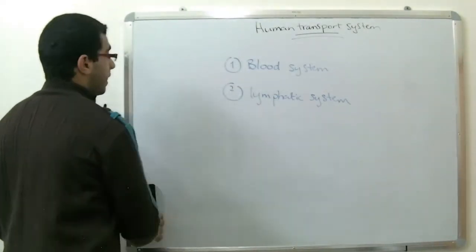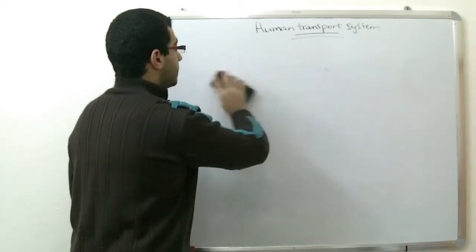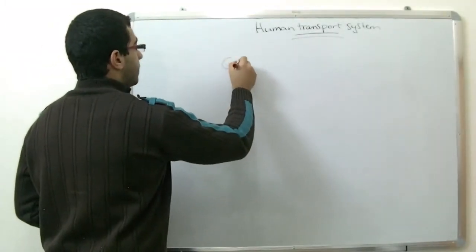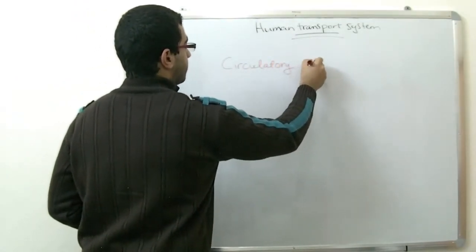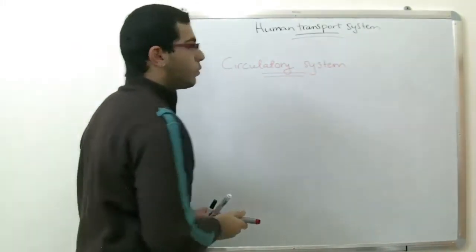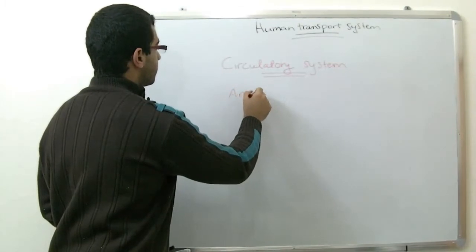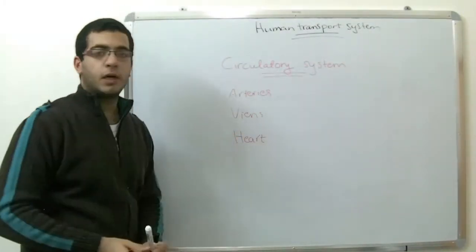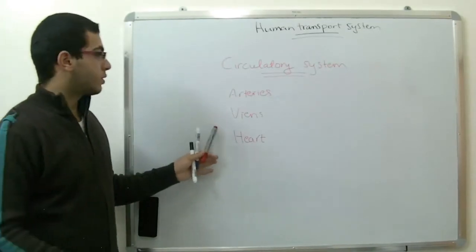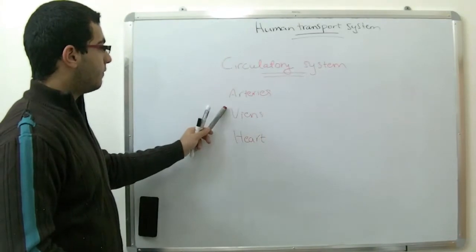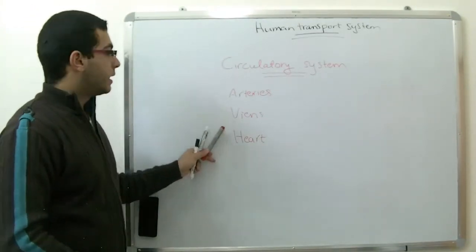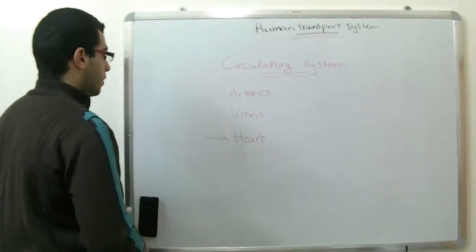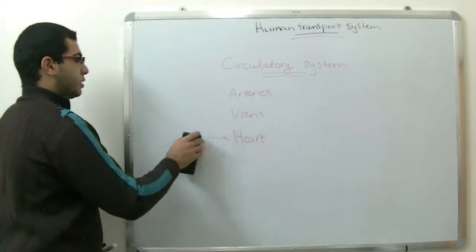We will begin to talk about the blood system or as we address it as the circulatory system. The circulatory system consists of a network of arteries and veins and of course the heart which spreads all over the body. It's a closed circle because both the arteries and veins open into the heart and the heart pumps the blood in both of them. The blood circulates and returns to the heart. So we will begin talking about the heart in the circulatory system.